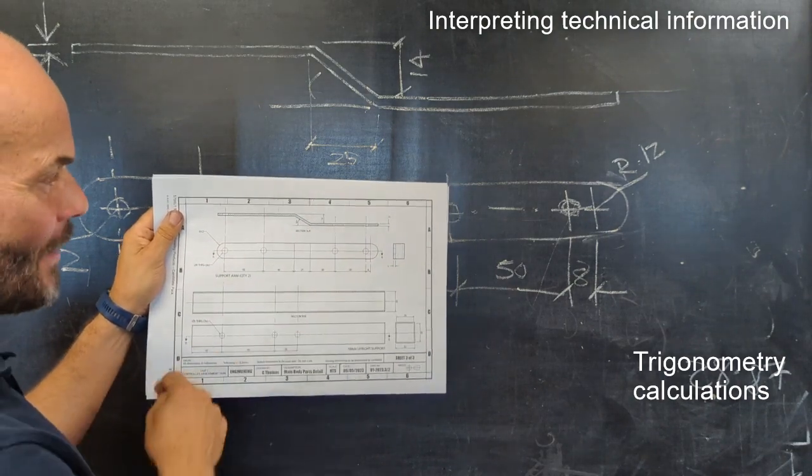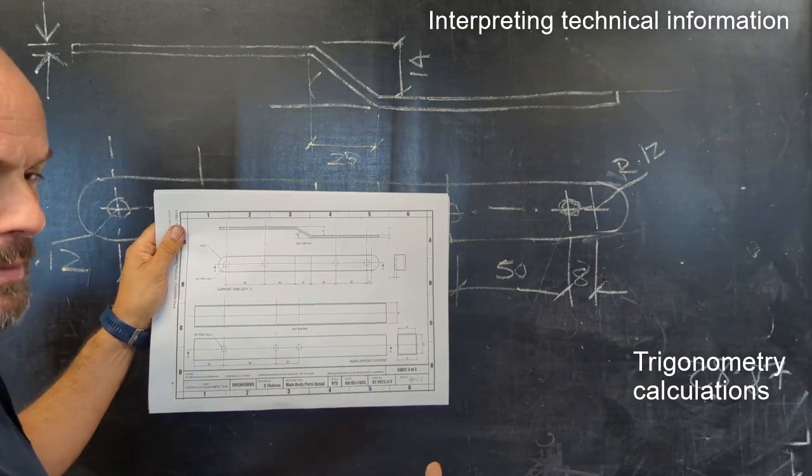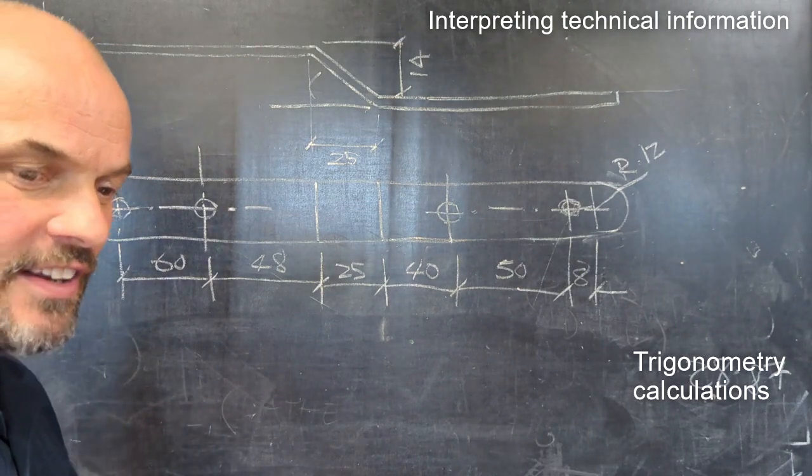You've got a length of it looking straight down on it, but you don't have a true length of the diagonal piece. So we have to use a bit of math - a lot of math in engineering, so bear with me.